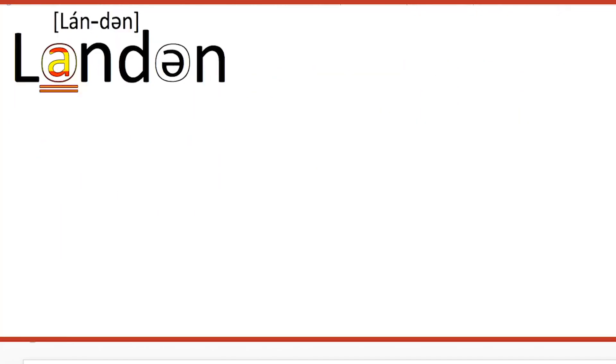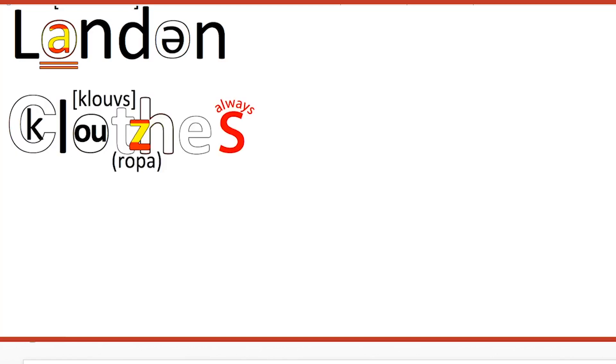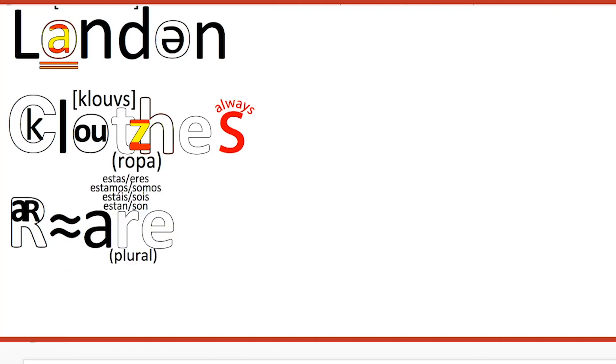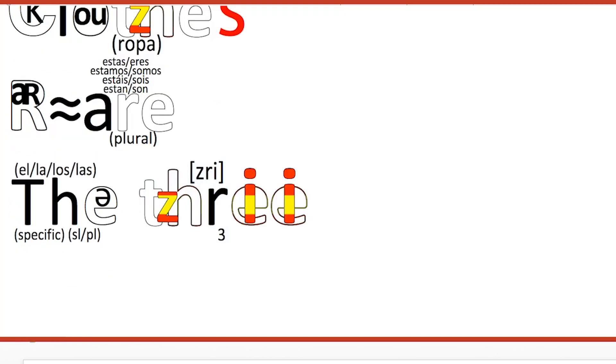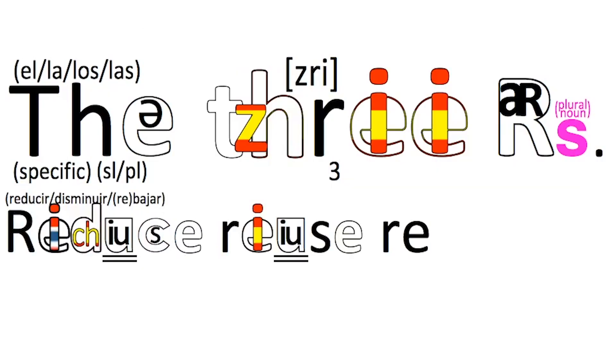Anyway, returning to the environment. Second-hand clothes — you can pronounce 'clothes' with a Z or with a V. How do you pronounce the letter R? It's not 'R', it's R — exactly the same sound. So you could talk about the three R's: Reduce, Reuse, and Recycle.